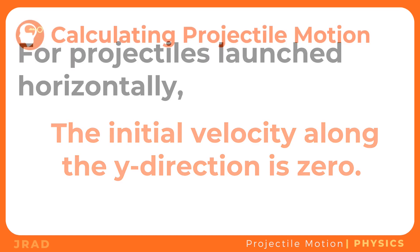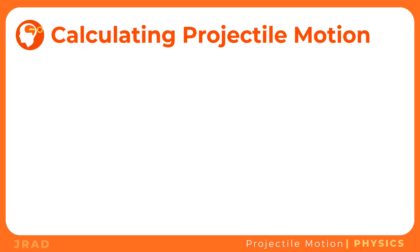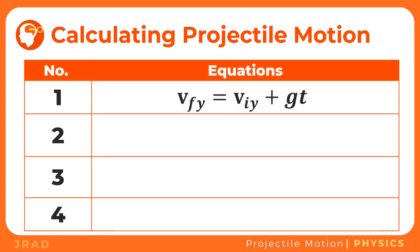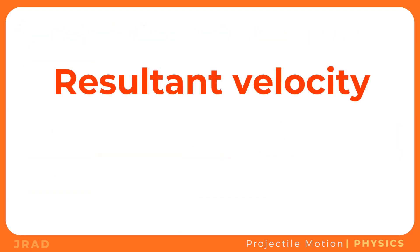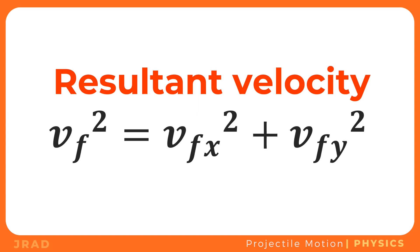To solve for the other components, four kinematic equations will be used, with a subscript y added to emphasize velocities along the vertical direction. The equations are: vfy equals viy plus gt; y equals the quantity of final velocity plus initial velocity all over 2 times time; y equals viy·t plus one-half g·t²; and vfy² equals viy² plus 2gy. The resultant velocity is the vector sum of the horizontal and vertical components, solved using vf² equals vfx² plus vfy².